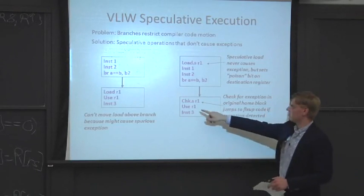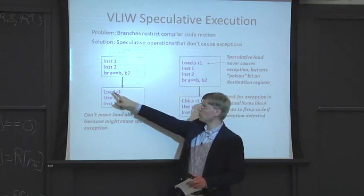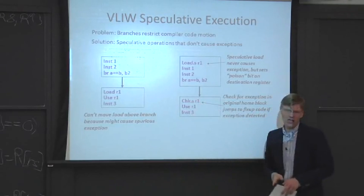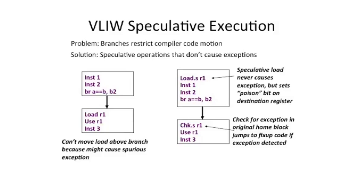Down where the load originally was, we put a check-speculative instruction that uses R1. This checks the value of R1 — if R1 took a trap or exception, we jump to fix-up code. That fix-up code re-executes the load, makes sure everything is OK, and jumps back to the use. It's speculation: we try to ensure the common case is fine when pulling the load up, but we put a check in just to be sure.